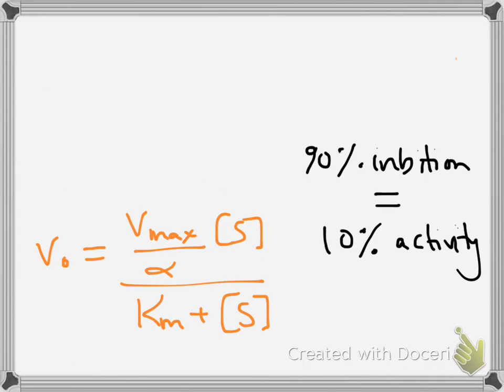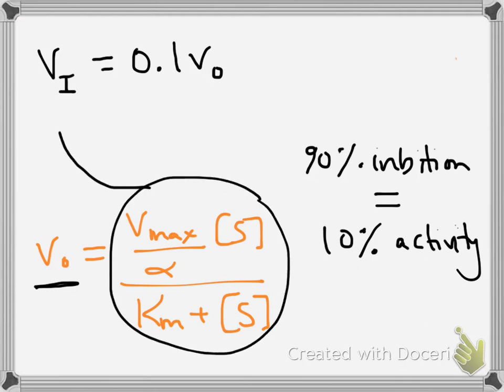...the initial velocity in the presence of inhibitor, which we'll note as V sub I, is one-tenth of the regular initial velocity of this enzyme without the inhibitor present. So then we build off this algebraic equation. And since we know that the initial velocity in the presence of this non-competitive inhibitor is equal to this, we place this whole term on this side of the equal sign. And it's equal to one-tenth of regular initial velocity.